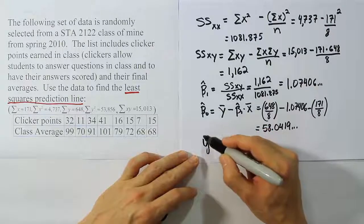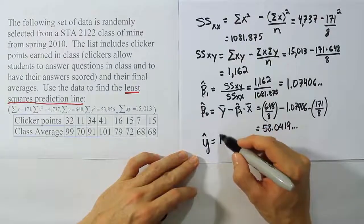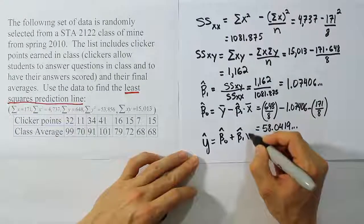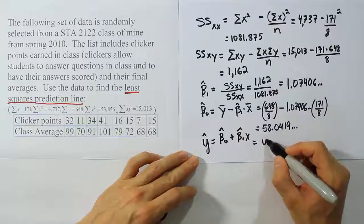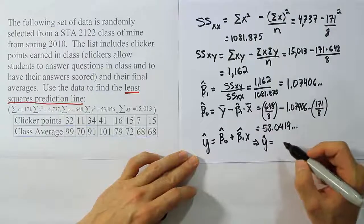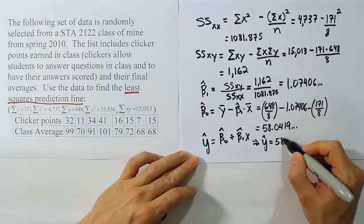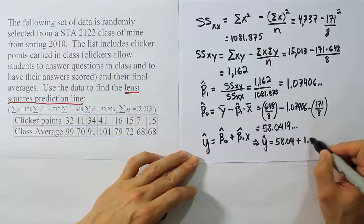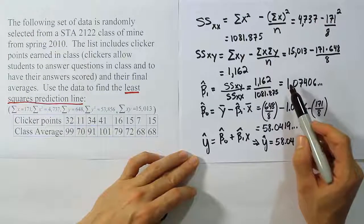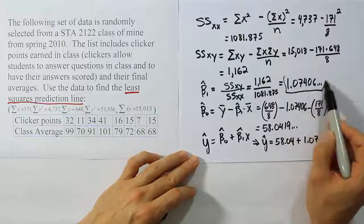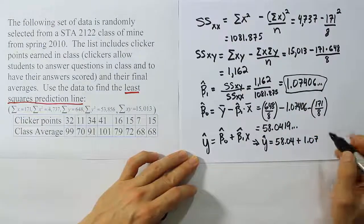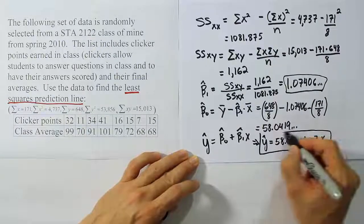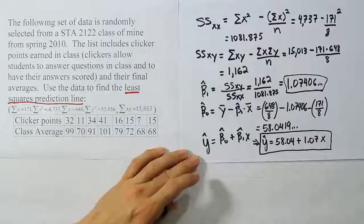At that point, the last step is to just plug that into the equation formula. The equation formula is Y-hat equals beta 0 hat plus beta 1 hat times X. For us, that's going to specifically be Y-hat equals beta 0, which is 58.04, let's say, plus 1.07. I'm just copying what I see here from my slope and rounding to two decimal places after the decimal point, times X. That's our equation. That's our answer to the part that says use the data to find the least squares prediction line.